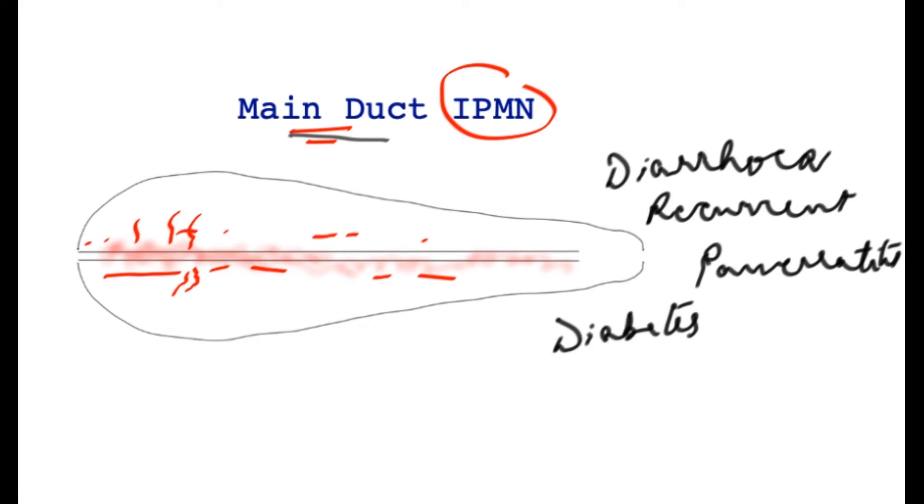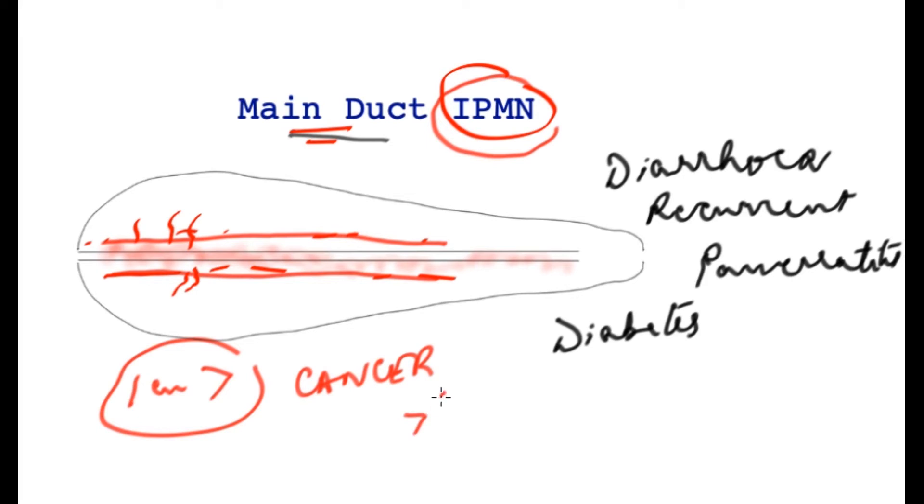However, the biggest risk is something even more serious. If the pancreas tube attains a diameter of one centimeter or greater, then there's a risk of cancer. This is a precancerous condition and studies have shown that once the threshold of one centimeter of the main pancreas tube is crossed, there is a higher risk of cancer developing in this condition.